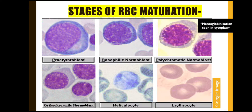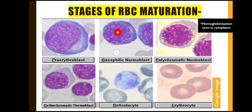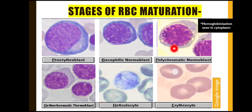The proerythroblast has fine chromatin, prominent nucleoli, and scanty cytoplasm. Then there are three stages of normoblast: early normoblast, intermediate normoblast, and late normoblast. The early normoblast, also known as the basophilic normoblast, has more condensed chromatin compared to the proerythroblast, no nucleoli, and scanty to moderate basophilic cytoplasm. Then comes the polychromatic normoblast, where the cytoplasm has a pinkish change because hemoglobinization has started.